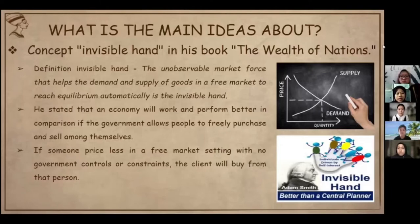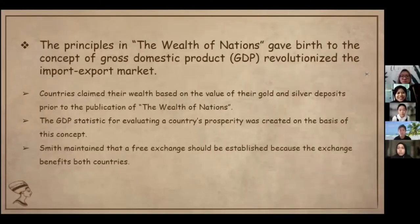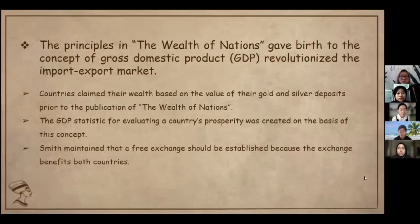The buyer will get items at the desired price and the supplier will get their price. The second main idea is the principle in The Wealth of Nations which gave birth to the concept of GDP and revolutionized the import-export market. Prior to the publication of The Wealth of Nations, countries claimed their wealth based on the value of their gold and silver deposits. Smith challenged mercantilism, claiming that countries should be judged on the level of output and trade. The GDP statistic for evaluating a country's prosperity was created on the basis of this concept.